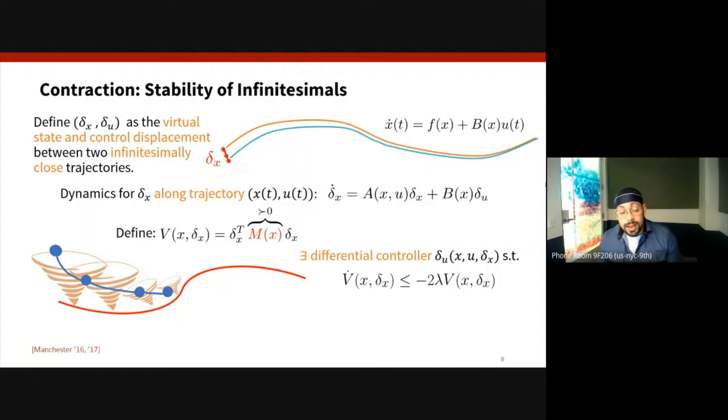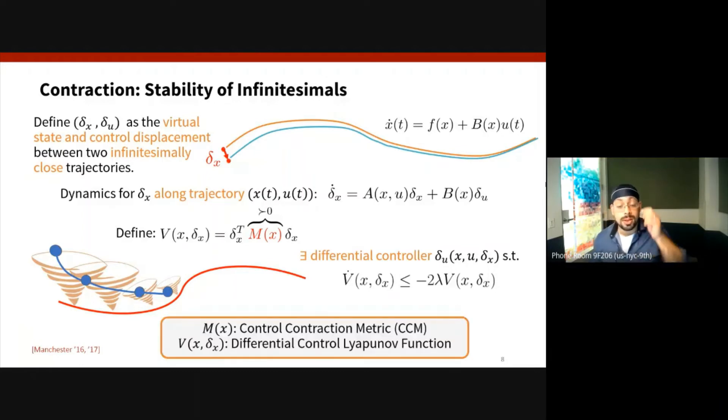So if we can find such a matrix-valued function M and a differential controller δu, then the matrix function M is termed as a control contraction metric, and the function V, as a natural analogy to control Lyapunov functions, is termed a differential control Lyapunov function.